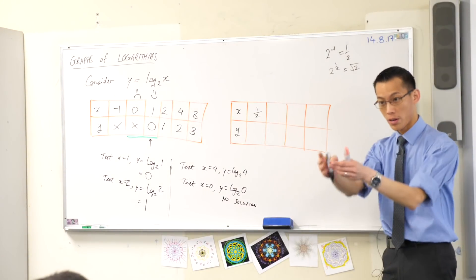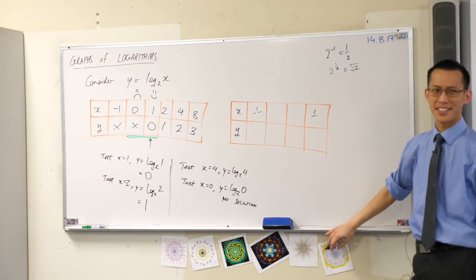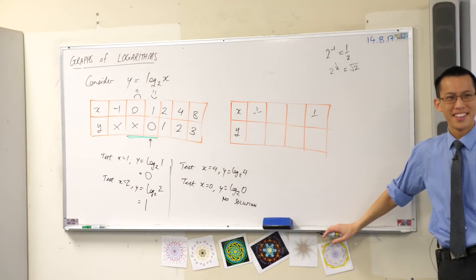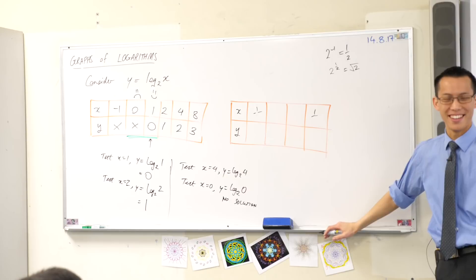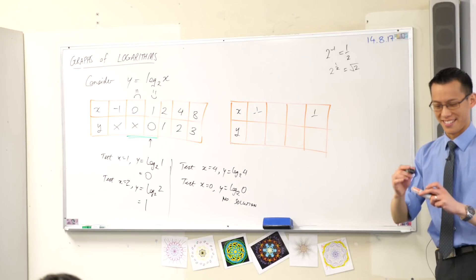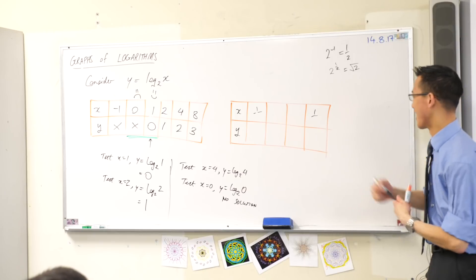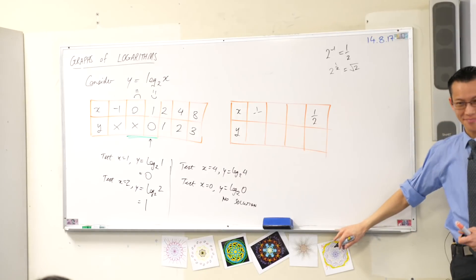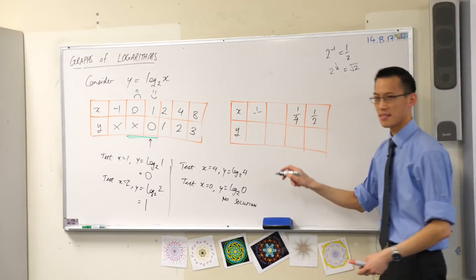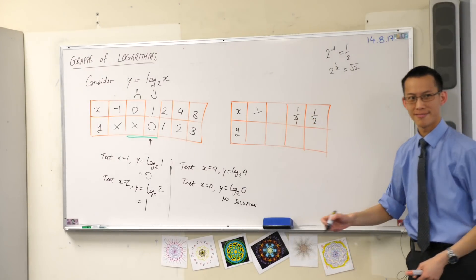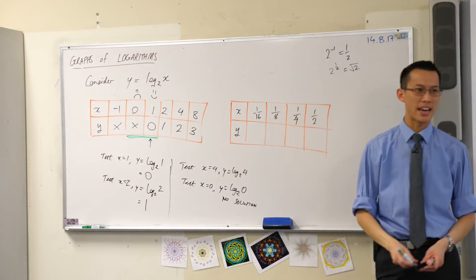So a quarter is smaller. So maybe instead of a half being here. Settle down. I'm going to put a half over here. Brian then suggested a quarter. And then an eighth. And then a sixteenth.